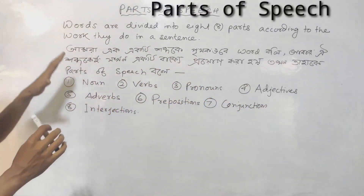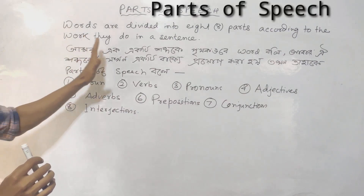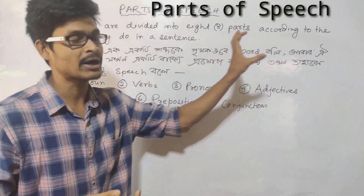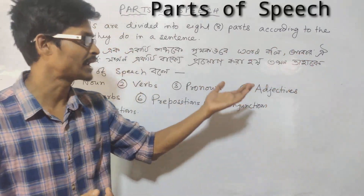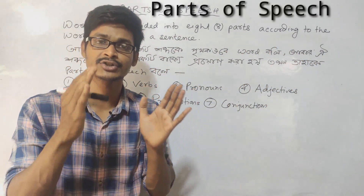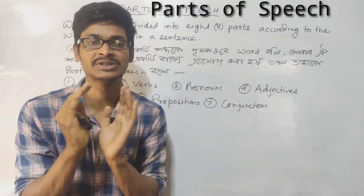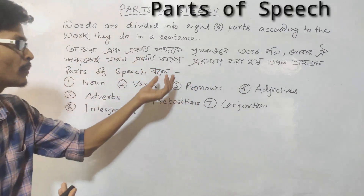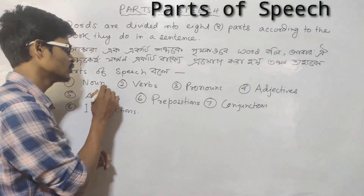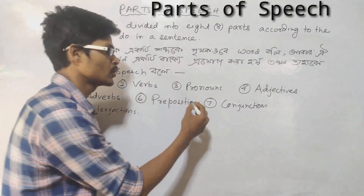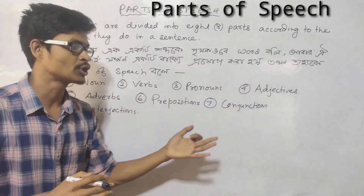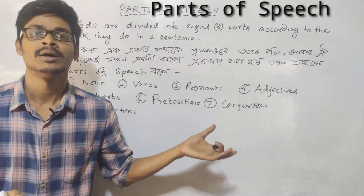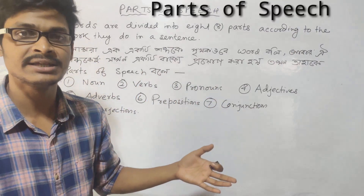Parts of speech — you can see the paragraph. To speak the word, you can see the word, your sentence. Parts of speech: noun, adjective, adverb, preposition — these are the parts of speech. Also: noun, verb, pronoun, adjective, adverb, preposition, conjunction, and interjection.